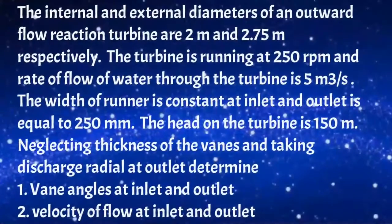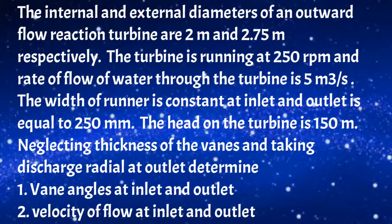First I will read the given problem. The internal and external diameters of an outward flow reaction turbine are 2 meter and 2.75 meter respectively. The turbine is running at 250 rpm and the rate of flow of water through the turbine is 5 meter cube per second. The width of the runner is constant at inlet and outlet and is equal to 250 millimeters. The head on the turbine is 150 meter. Neglecting the thickness of vanes and taking discharge radial at the outlet, determine vane angles at inlet and outlet, and velocity of flow at inlet and outlet.